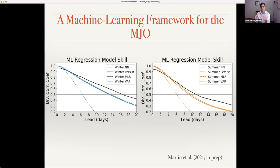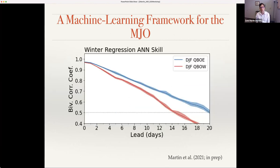The ANN has modestly more skill than the traditional linear approaches. But I'll emphasize we don't have skill up to 25 or 30 days as you'd see in a dynamical model. Unlike situations like ENSO, where machine learning models showed really high skill right away, here we're not yet competitive with state-of-the-art dynamical models. That said, this doesn't invalidate these models as being useful.